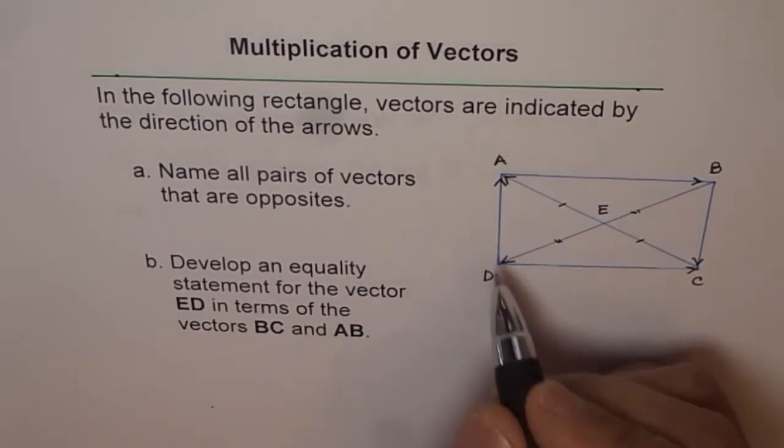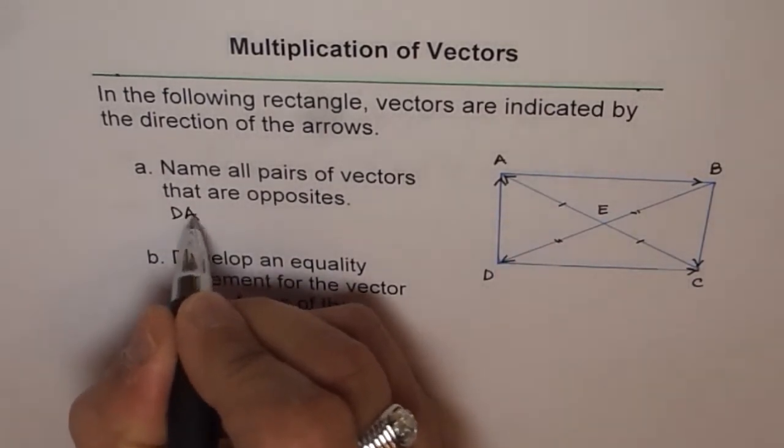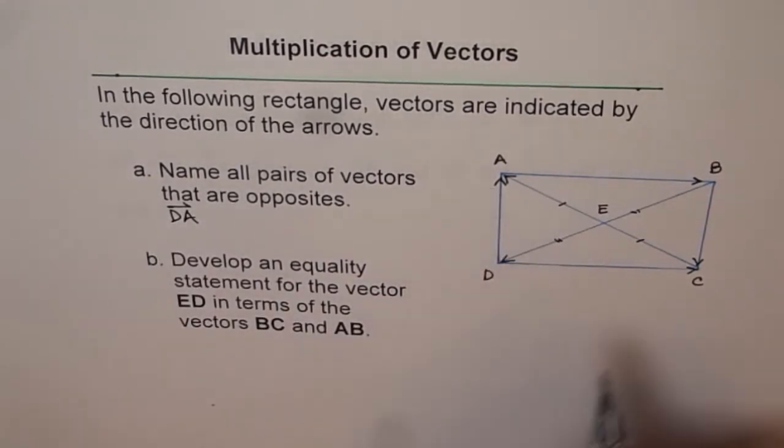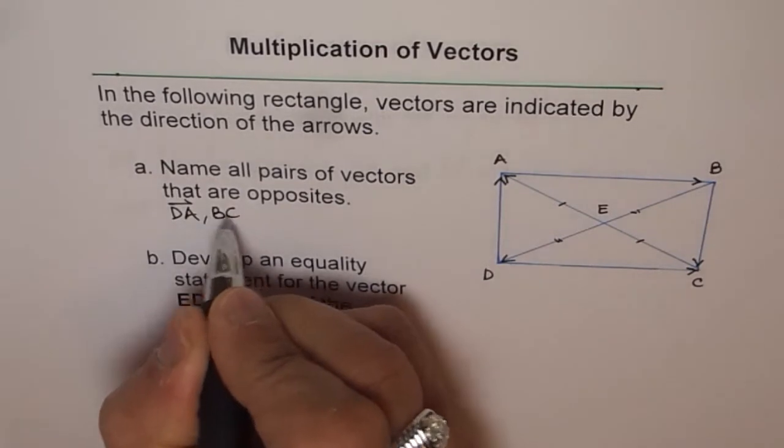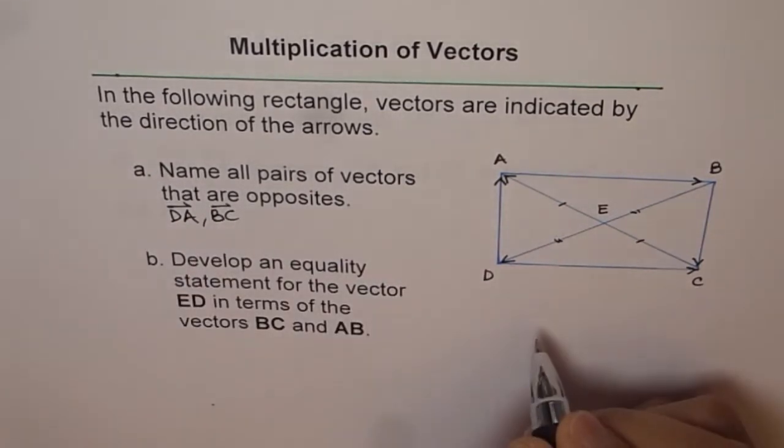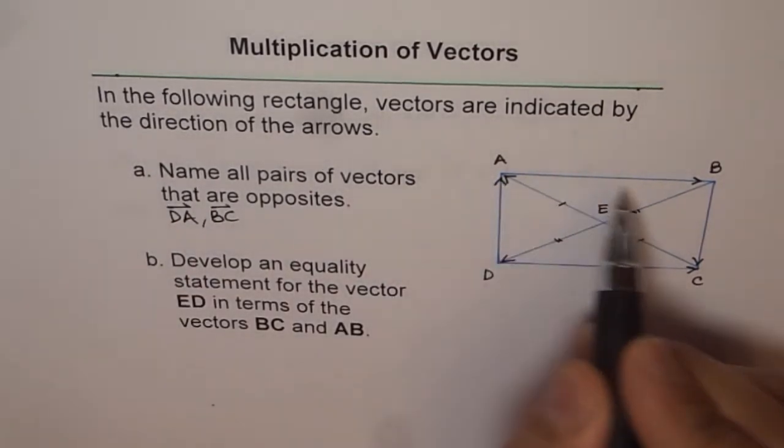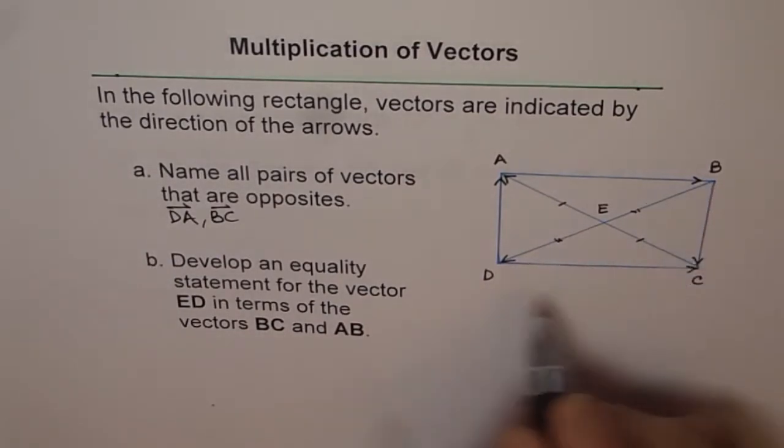Now, like you can start like this. DA is opposite to BC, right? So, this is one pair. The others you can write like AB is opposite to CD.